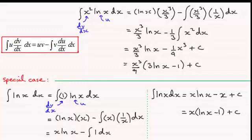So that gives you some idea now of how you go about these types where you've got the natural log of x being multiplied by some function of x, and this special case. Always put your natural log function equal to u.